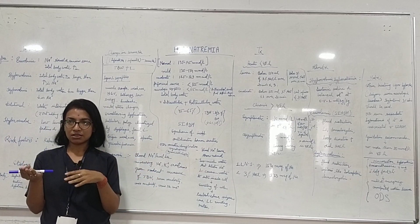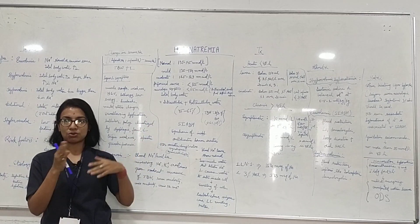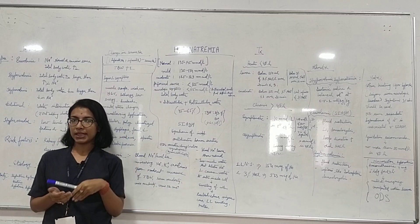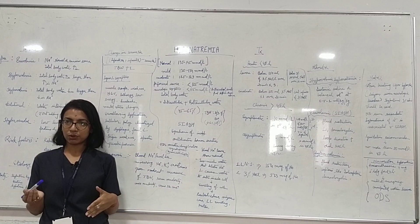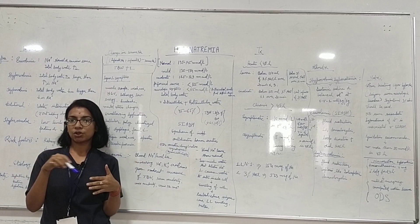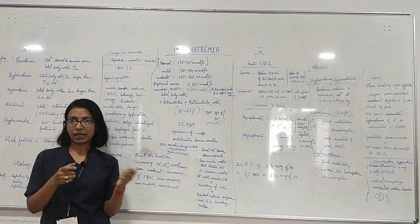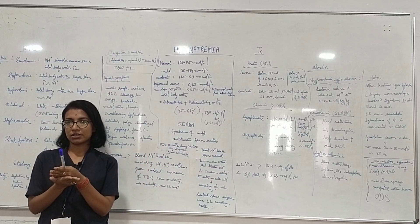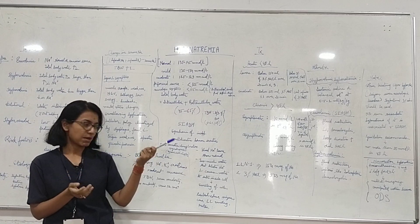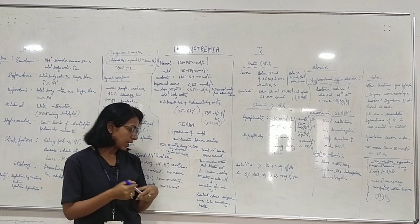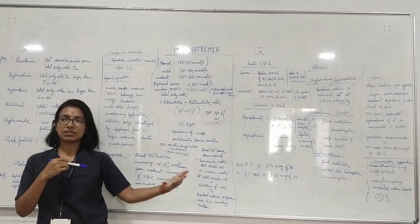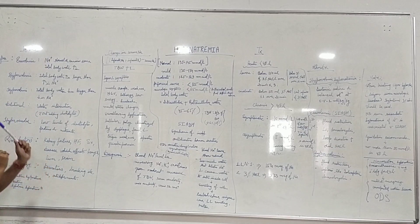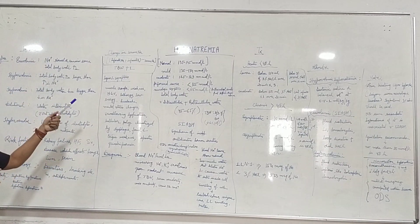Further complications include seizures along with hyponatremia. There will also be swelling in the lower limbs due to fluid overload, and fluid can accumulate in the abdomen causing ascites, which is associated with liver disorders. If left untreated, it can also lead to coma.